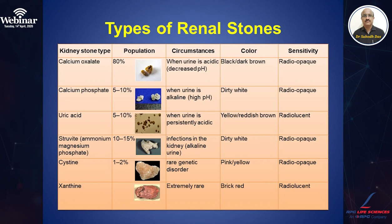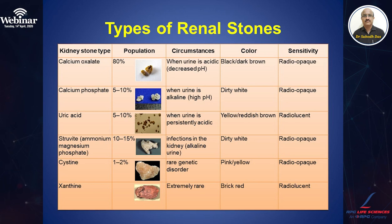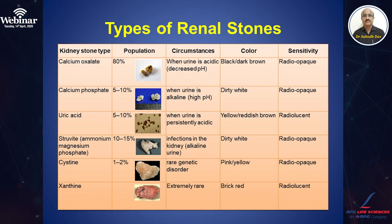Various renal stones depend on composition. The most common is calcium oxalate, accounting for almost 80 percent of all renal stones; this occurs when urinary pH decreases — that is, acidic pH. The color is usually black or dark brown, and they are radio-opaque. Next common are calcium phosphate stones, which occur in alkaline urine and are dirty white in color. Uric acid stones account for 5 to 10 percent of all stones and occur when urine is persistently acidic; they are yellow or reddish-brown in color.